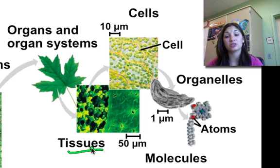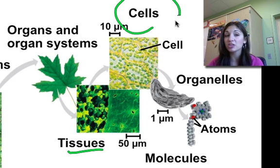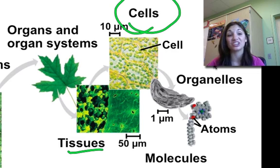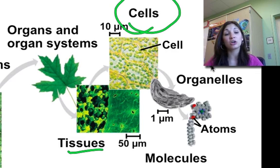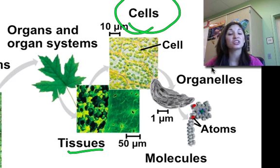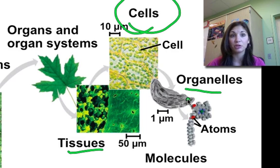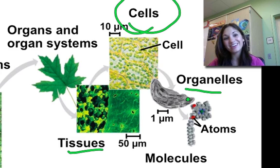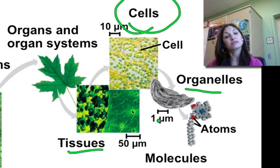We start getting down to what we consider the smallest unit of life: the cell. The cell is the smallest part of an individual still considered alive — cells can go through all of the different characteristics of life. Cells in turn are made up of their own organelles, such as mitochondria, the nucleus, the endoplasmic reticulum, and the Golgi apparatus. Each of those is then made up of molecules and atoms. This represents the entire hierarchy of life.